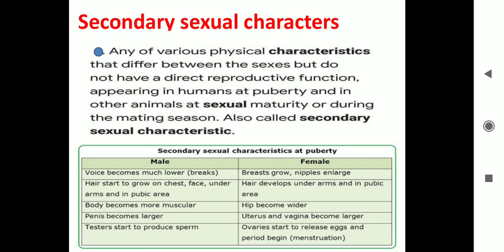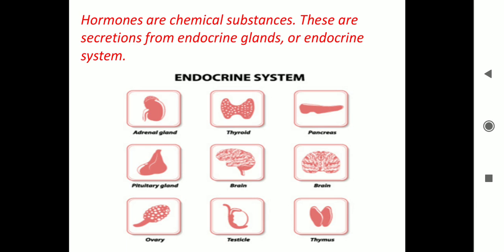A chart is given here which you can see on the screen — you will just have to make this chart in your copy as well. Next are the hormones that control the changes occurring at adolescence.